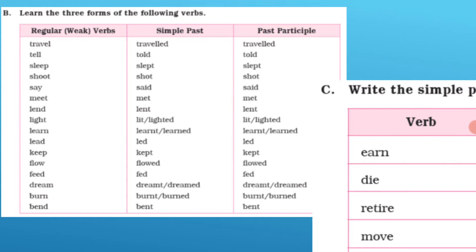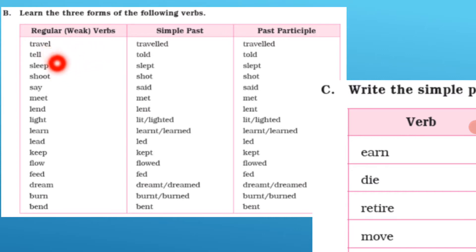Here we have a list of some regular verbs and we can see the present form, past form, and past participle form. Learn the three forms of the following verbs — you need to learn them. These are regular verbs, also called weak verbs. Please, I would request you to learn them, because there is no shortcut. You have to learn them, and they are very easy.